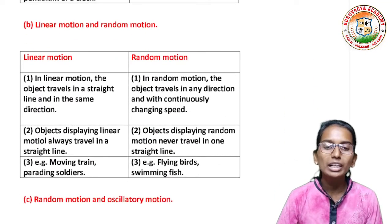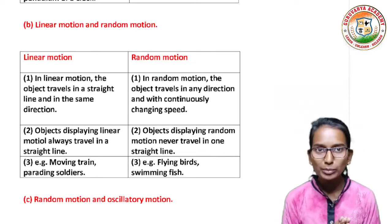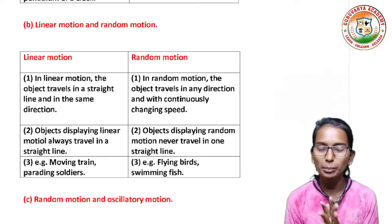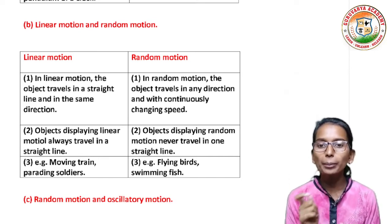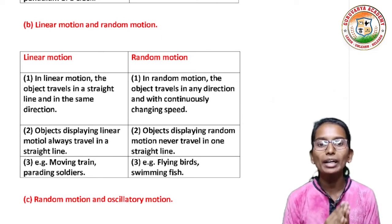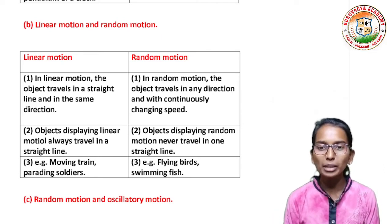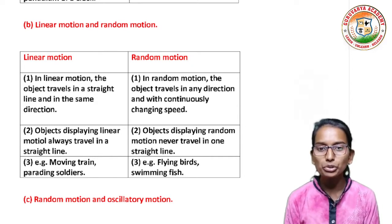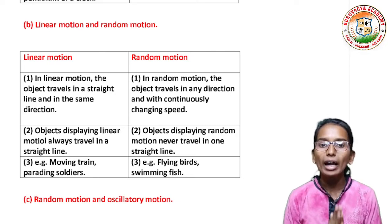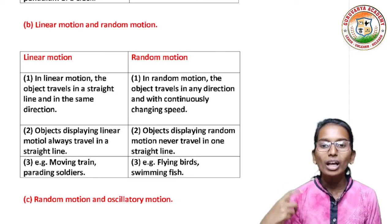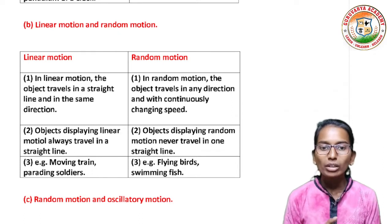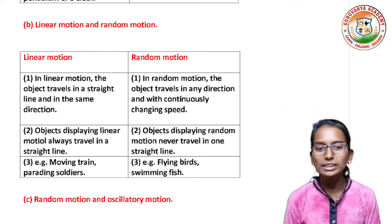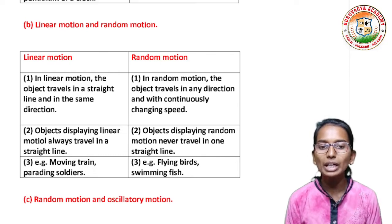Now we differentiate between linear motion and random motion. In linear motion, the object travels in a straight line and in the same direction. In random motion, the object travels in any direction with continuously changing speed. Objects displaying linear motion always travel in a straight line, while objects displaying random motion never travel in one straight line.